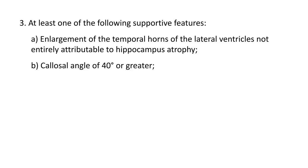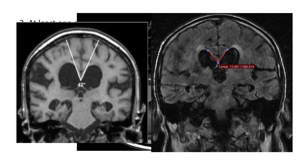You should also have a callosal angle of 40 degrees or greater, as shown here — this example shows angles of 42 degrees and 73 degrees. There is evidence that an angle of greater than 100 degrees is more consistent with other forms of neurodegeneration such as Alzheimer's, mainly because of hippocampal atrophy.